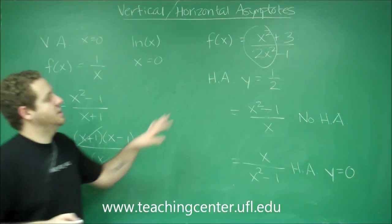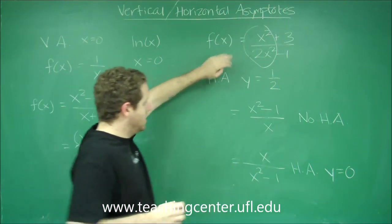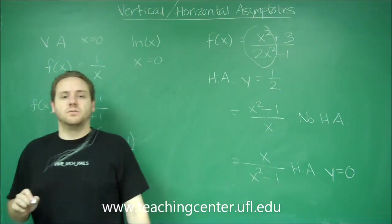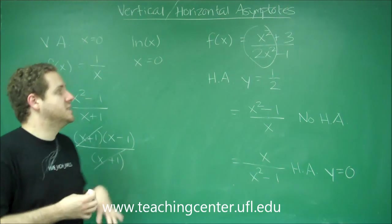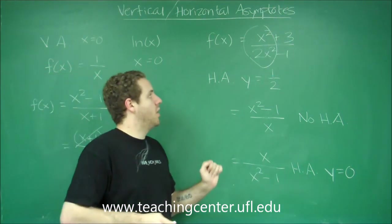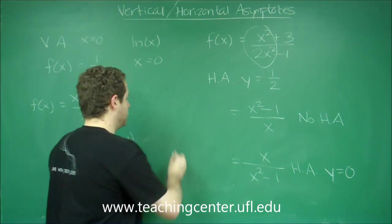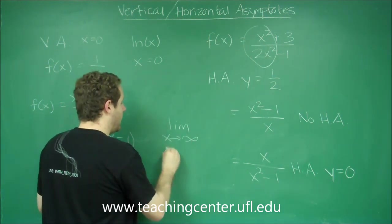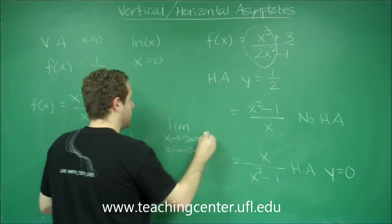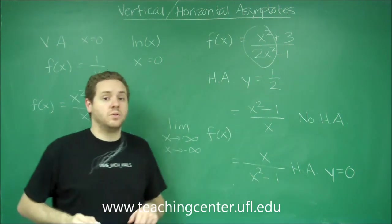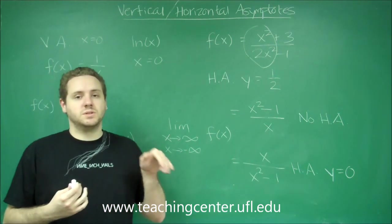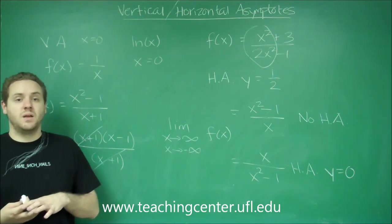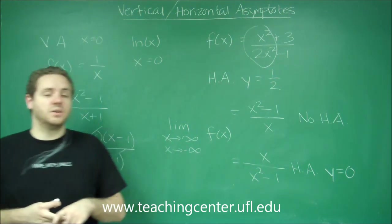So if they're the same degree, you look at the coefficients on those degree terms. If the top is higher degree, you have no horizontal asymptote. And if the bottom is higher degree, you always have a horizontal asymptote of y equals zero. And if it's any other function that's not a ratio of polynomials, you need to just do the limit as x goes to infinity and x goes to negative infinity of f of x. Because it is possible that a function could have two horizontal asymptotes if the positive infinity and negative infinity limits are different. That's how you calculate vertical and horizontal asymptotes.